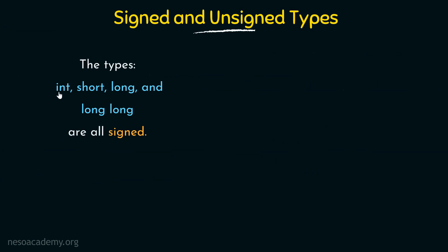The types integer, short, long, and long long are all signed by default. Whenever we make use of these data types discussed in previous lectures, they are already signed by default. So if you are using a simple int, short, long, or long long, they are by default already signed — meaning they can support even negative numbers.